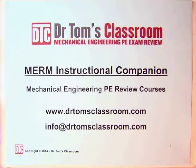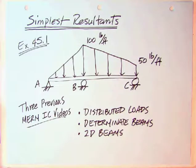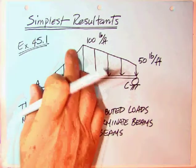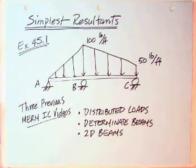Okay, let's get started. This instructional companion is titled Simplest Resultants, and it will be based on example 45.1, an example that we have already done three previous instructional companions.